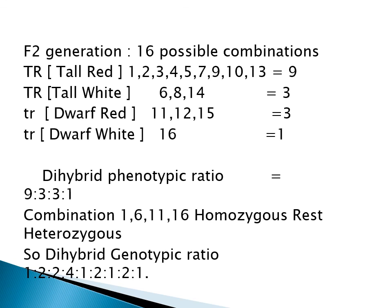The dihybrid genotypic ratio is 1:2:2:4:1:2:1:2:1. The phenotypic ratio is 9 is to 3 is to 3 is to 1, and there is a corresponding genotypic ratio. In the F2 generation there are 16 possible combinations — tall red, tall white, dwarf red, and dwarf white — with their respective numbers.